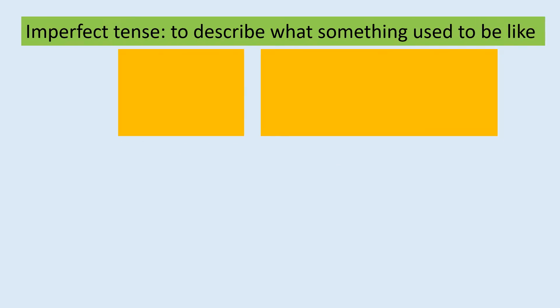Today we are learning the imperfect tense. It is a tense also in the past, but we don't use it to talk about actions in the past — we use it to describe what something used to be like.